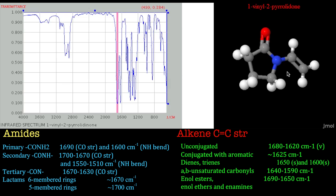This is a special kind of amide called a lactam. Lactams are basically cyclic amides, and what you'll find is that the bigger the ring, the lower the energy. Because it's a five-membered ring, this is coming at 1699 — around 1700 wavenumbers — which is pretty much spot on for a five-membered ring lactam. If it were a six-membered ring or larger, it'd be slightly lower, around the 1650–1670 region.